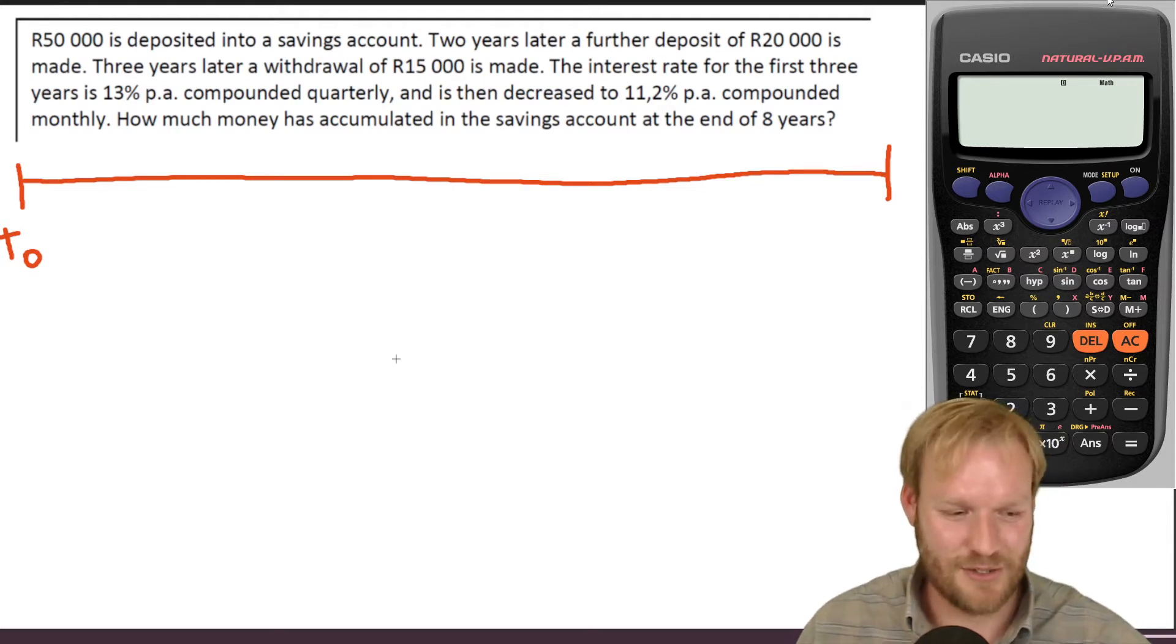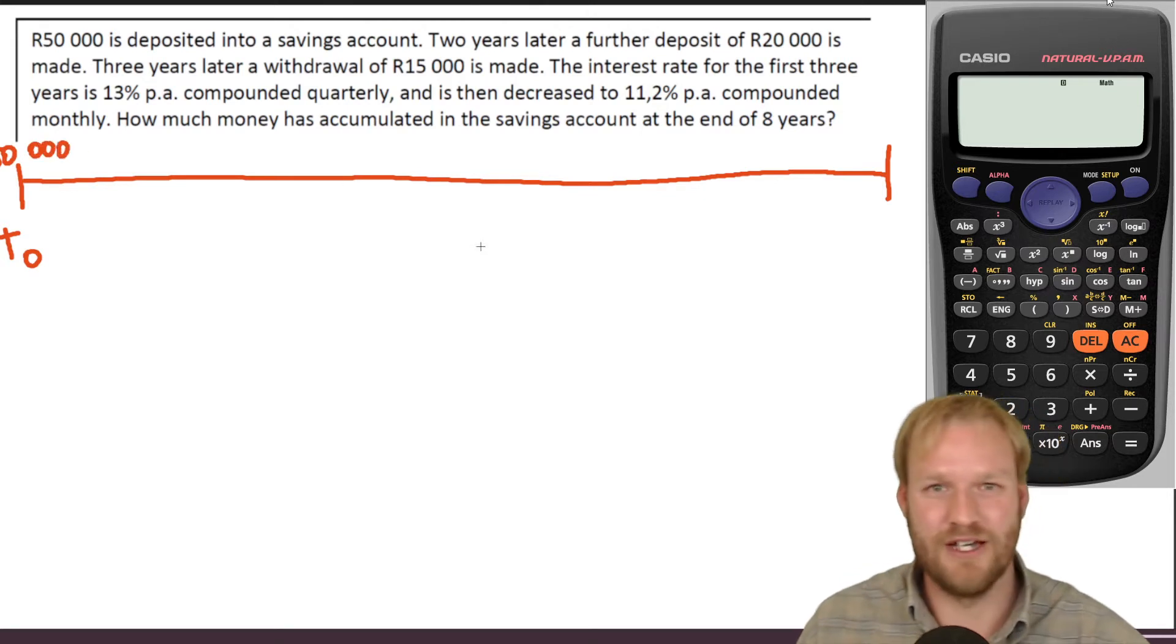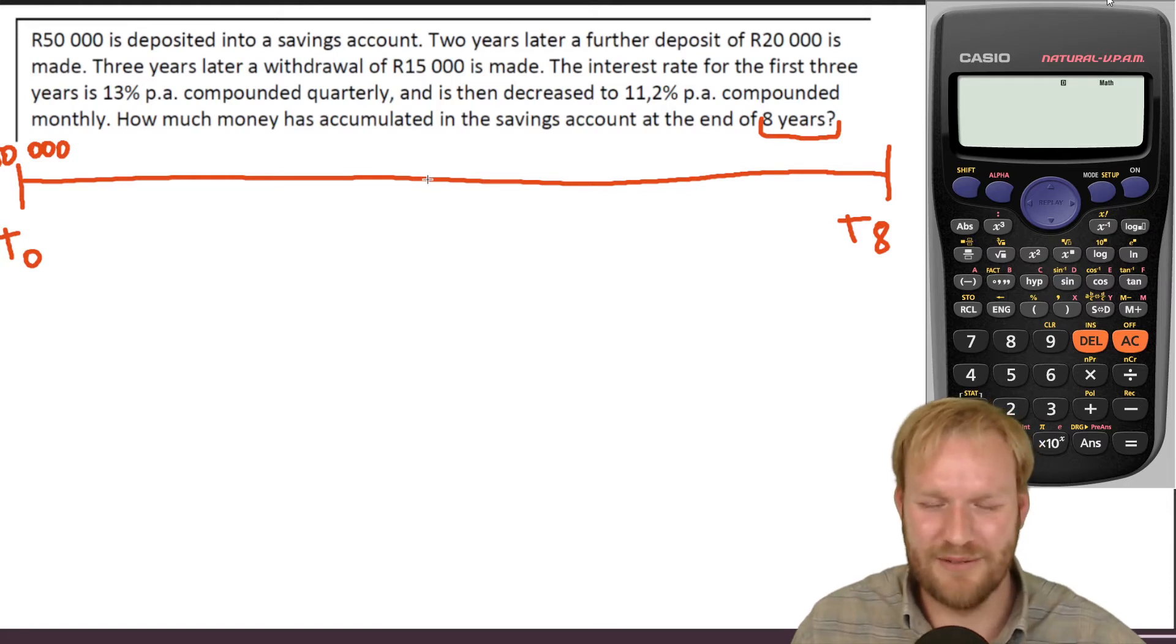So 50,000 Rand is deposited right at the beginning. So we're going to put 50,000 Rand in right at the beginning. Two years later, a further deposit of 20,000 is made. Three years later a withdrawal is made, and the interest rate by how much is over eight years. The reason I'm jumping to the end is I want to know that the last bit's T eight. So I've got a little bit of scale to my timeline, a little bit of scale to our diagram.